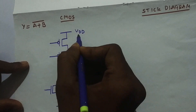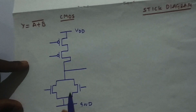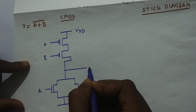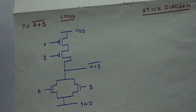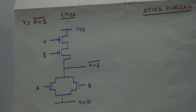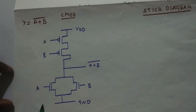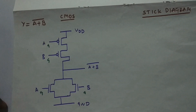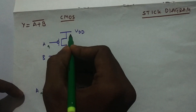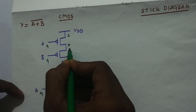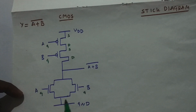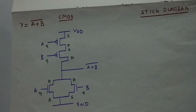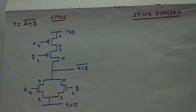This is VDD at the top — the pull-up network — which always pulls the network high. The pull-down network pulls it down. These inputs are A and B, and the output is A + B whole bar. Before going to the stick diagram, label the source and drain on each transistor. For PMOS, top connections are sources and the middle connections are drains. For NMOS, the lower connections are sources and the upper are drains.